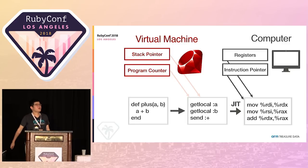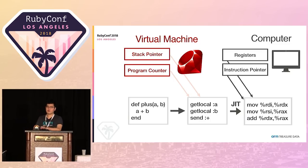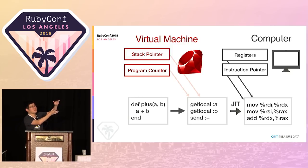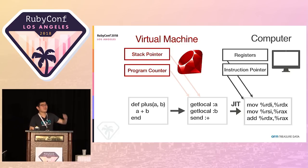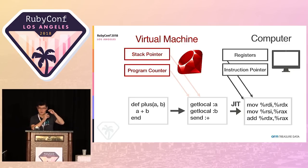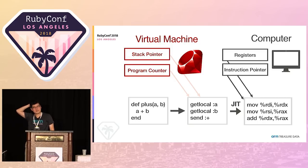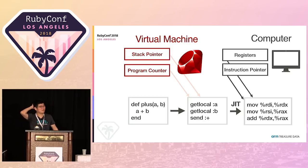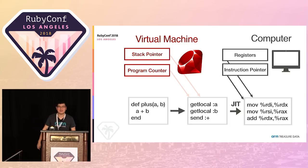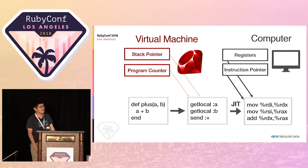Q: How much overhead does JIT compilation add? The bottleneck is the C compiler's optimization process. When the MJIT worker transpiles Ruby bytecode to C code, that step takes only some milliseconds. But then the C compiler is spawned and does heavy optimization — that's the slow part. It takes about 50 milliseconds minimum, and up to 200 milliseconds on my strong machine, potentially slower on weaker machines.